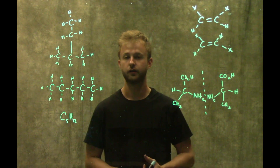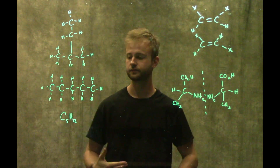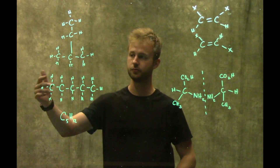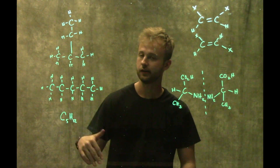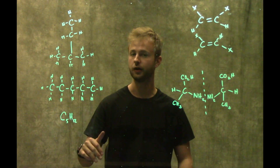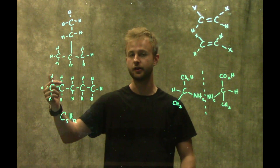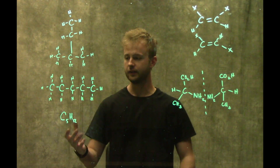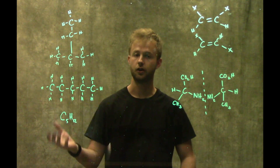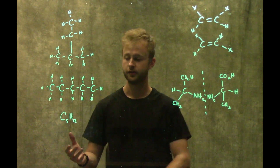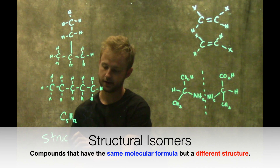There are three kinds of isomers that we're going to look at today. These two molecules are going to have the same molecular formula, which will be C5H12, but the way that those molecules are connected to one another is going to be different. The structure of these molecules are different, so these are going to be structural isomers.